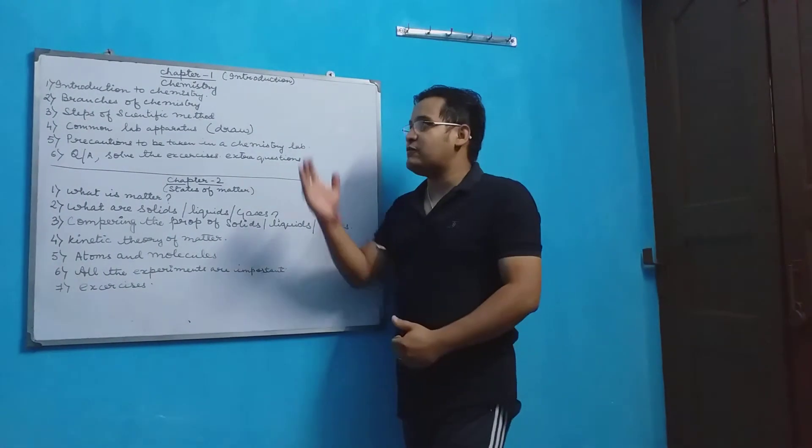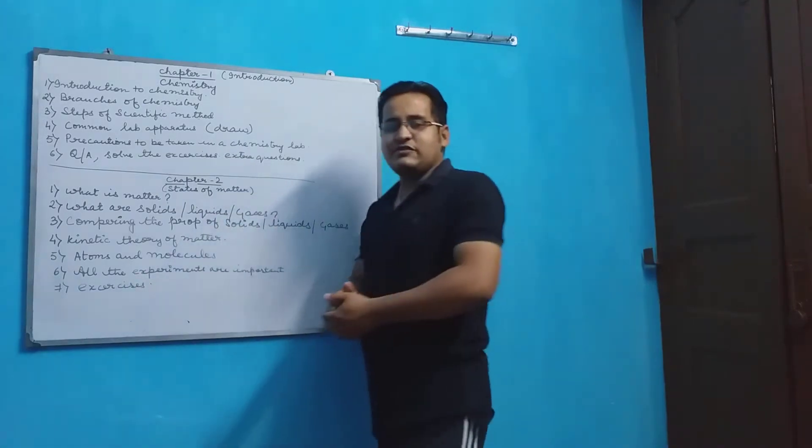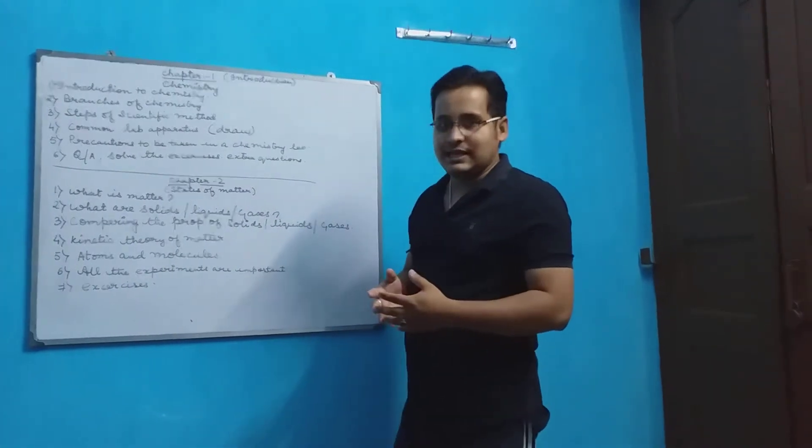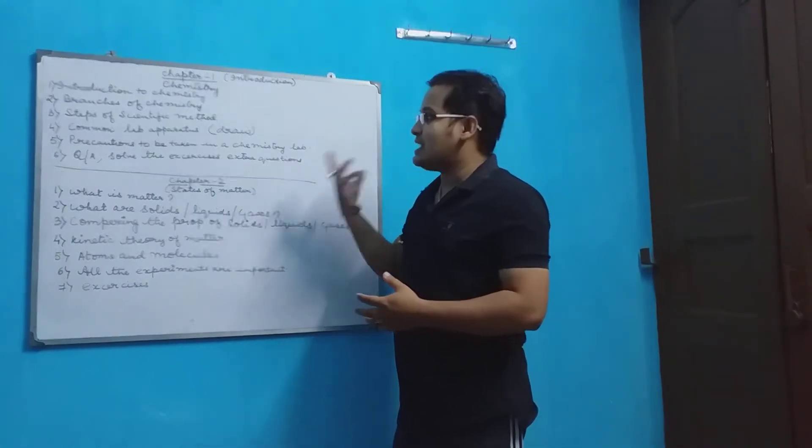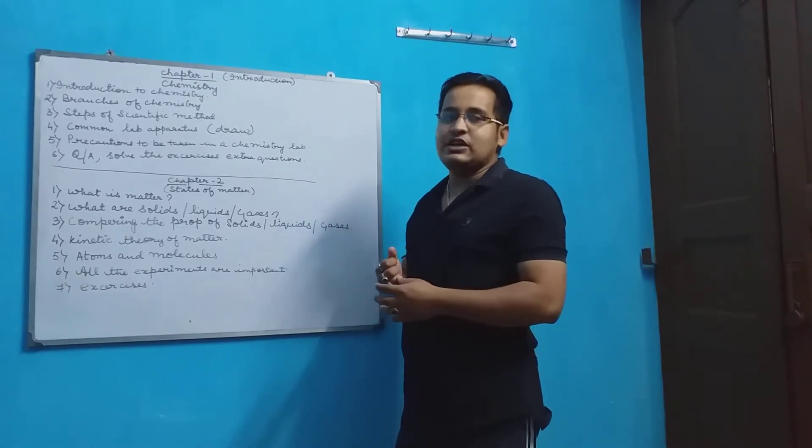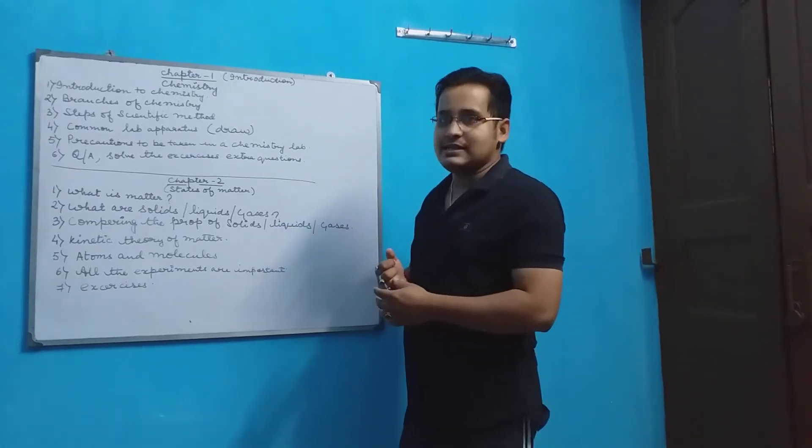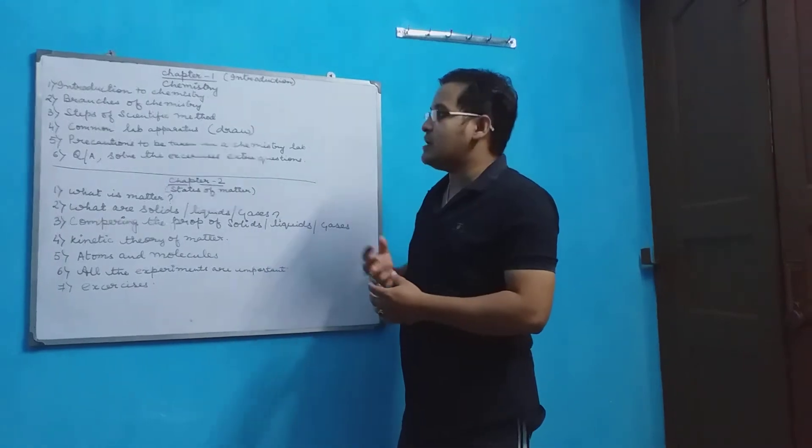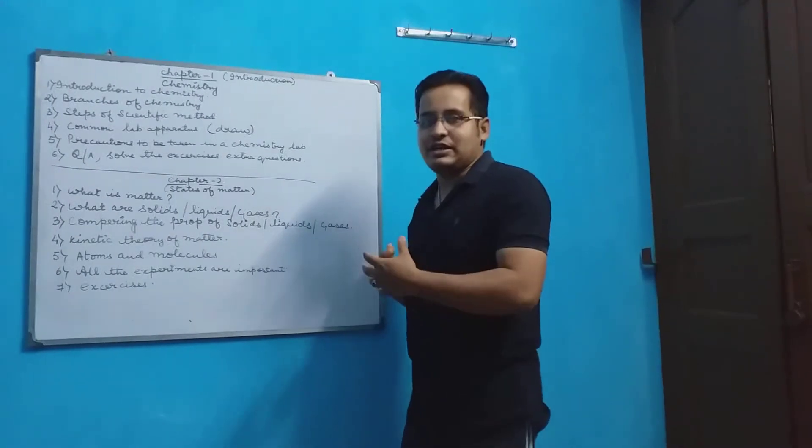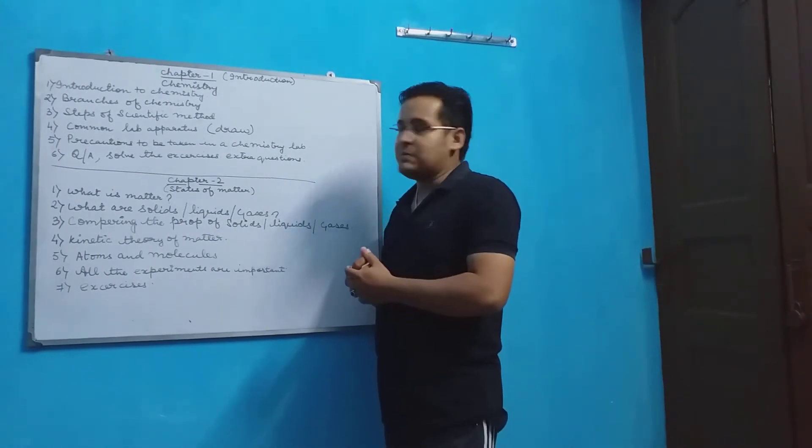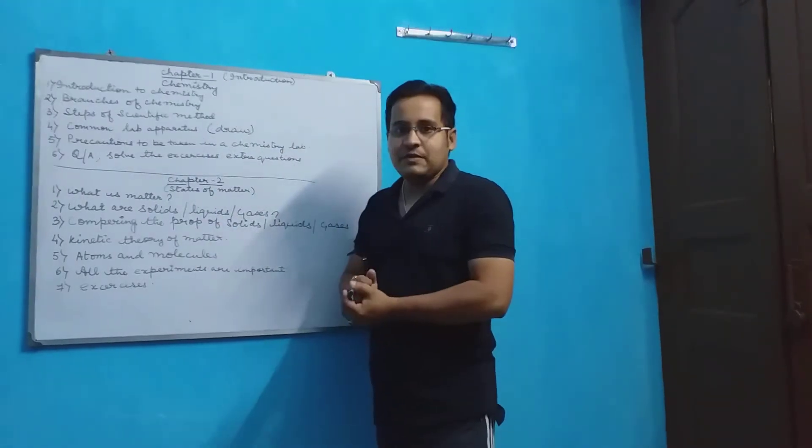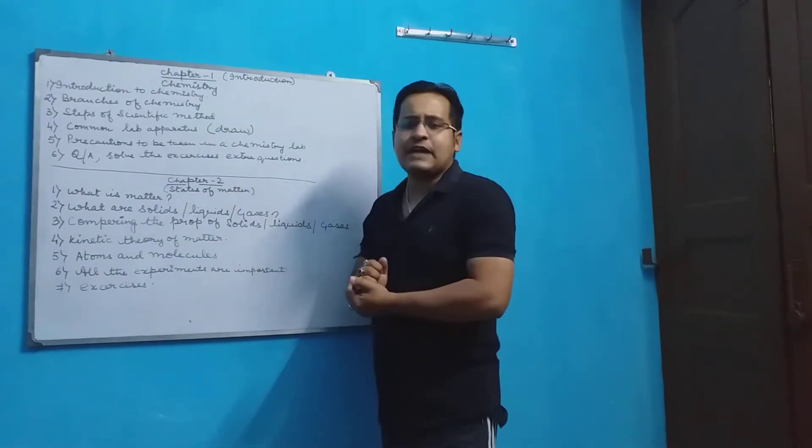Chapter 1 chemistry, we start with introduction to chemistry. As we all know, we have studied science in class 5 but in class 6, science divides into 3 subjects, physics, chemistry and biology. Here we will study about chemistry. Mainly chemistry is the study of chemicals, branches of chemistry and then steps of scientific method.